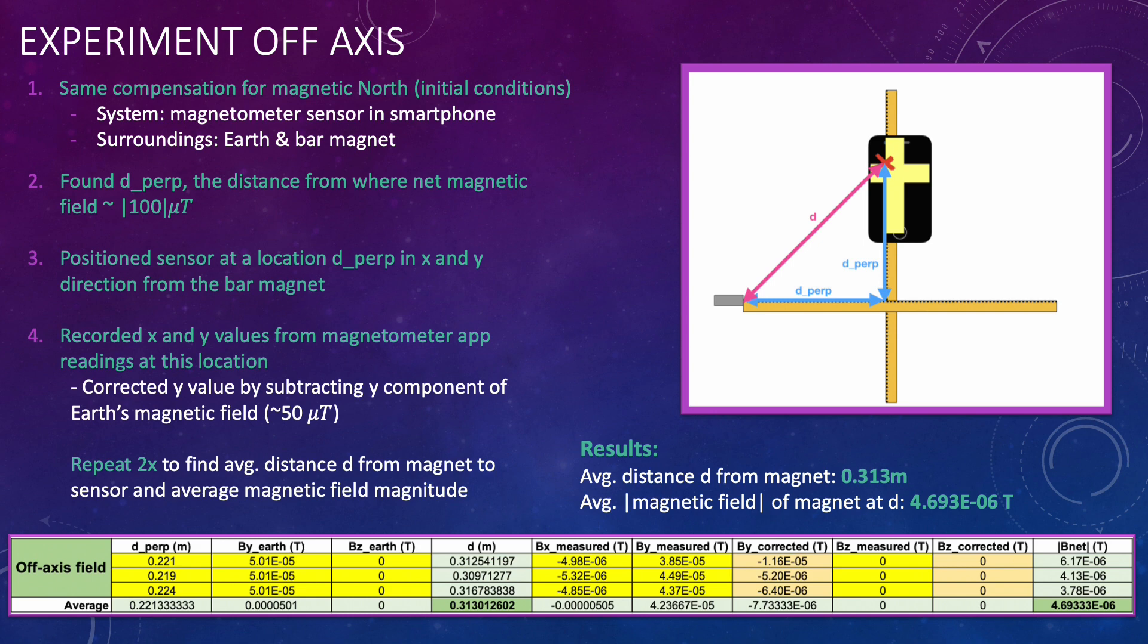I then recorded the x and y values from the magnetometer app and corrected the y value by subtracting the y component of Earth's magnetic field which in my location is around 50 microteslas.